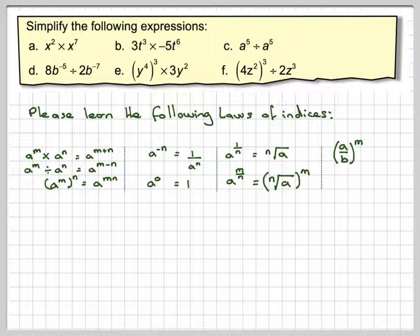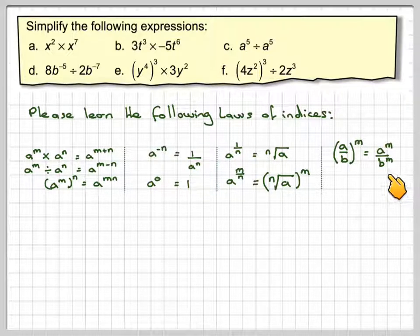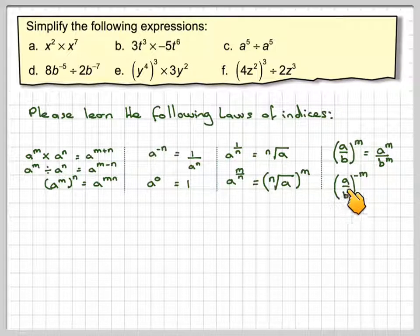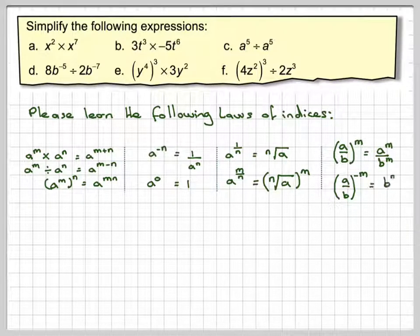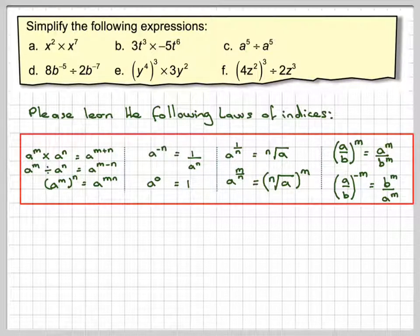Now, these are two that are not normally taught, but a over b to the m is the same as a to the m over b to the m. So you can actually apply the power to each of these things individually and then work out the fraction. And this one's quite useful: a over b to the minus m means that you invert them round the other way and then write b to the m over a to the m. These two normally aren't taught, but they're quite useful. So these are some of the rules of indices that you really should try to learn.